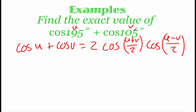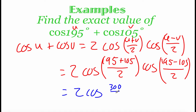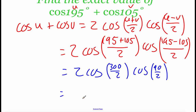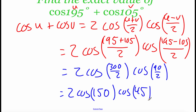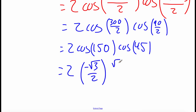With 195° as u and 105° as v, we get 2 times cosine of ((195 plus 105)/2) times cosine of ((195 minus 105)/2). Simplifying: 195 plus 105 is 300, divided by 2 is 150. And 195 minus 105 is 90, divided by 2 is 45. So we've got 2 times cosine of 150° times cosine of 45°. These angles are on our unit circle: cosine of 150° is −√3/2 and cosine of 45° is √2/2.